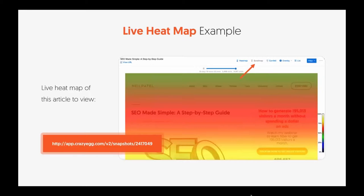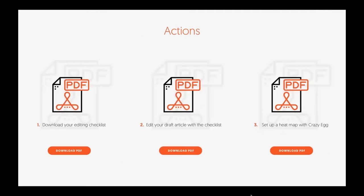Here's an example of a live heat map — you can see it. Action points for you: one, download your editing checklist; two, edit a draft article with the checklist; and three, set up a heat map using Crazy Egg. Follow those action items. We're going to take a quick break and then get into the next section — this is the last one for today about content marketing.